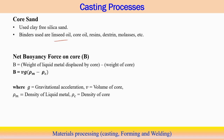The net buoyancy force on the core equals the weight of the liquid metal displaced by the core, which is rho × g × V, minus the weight of the core itself, which is rho_c × g × V, where V is the volume of the core. The net difference between these two gives the buoyancy force acting on the core within the mold cavity.